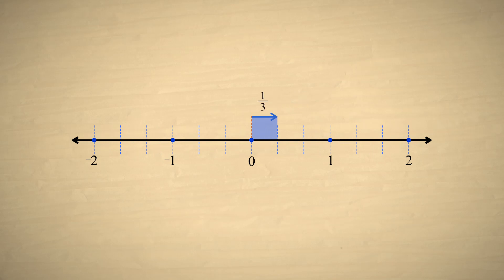This creates an equivalent fraction with a smaller numerator and denominator. So, this is called reducing or simplifying the fraction.